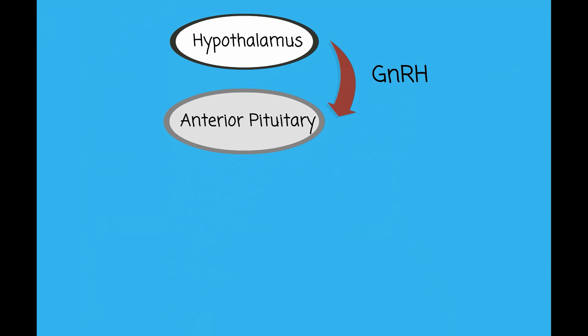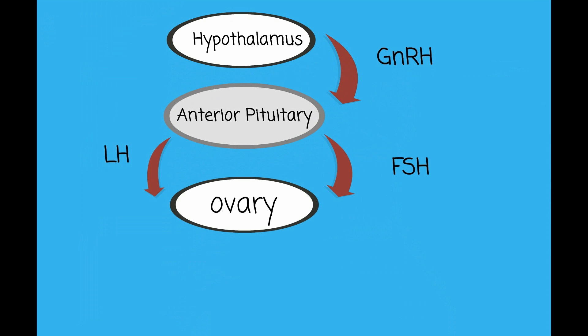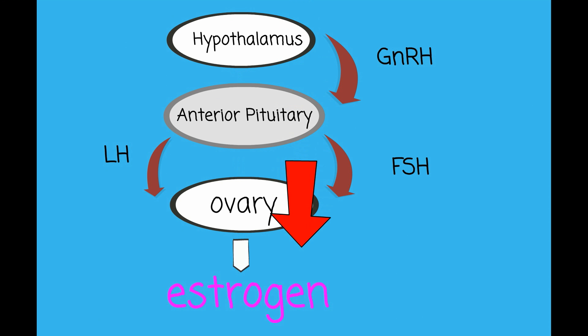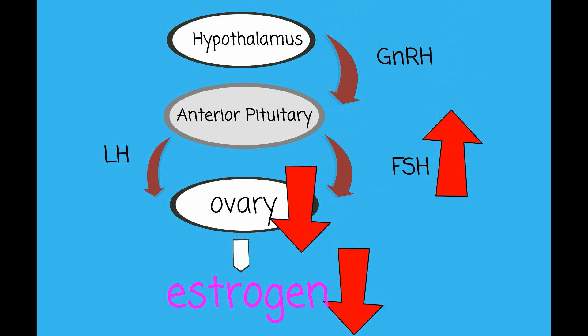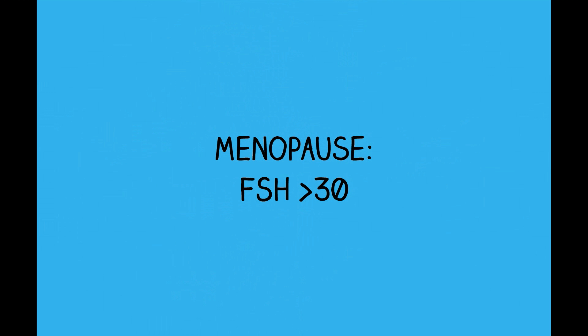The hypothalamus produces GnRH, which stimulates the anterior pituitary. The anterior pituitary produces FSH and LH, which stimulates the ovary to produce estrogen. With advancing age, as the number of oocytes decline, estrogen levels decline, the remaining oocytes become increasingly resistant to FSH, and FSH plasma concentrations increase. At the time of menopause, FSH levels are greater than 30.